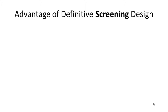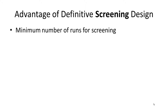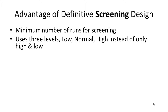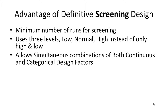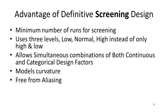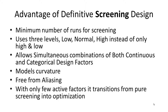Definitive Screening Designs are primarily used for screening and, as you'd want from screening, they have a minimum number of runs. But they use three levels — low, normal value, and high — instead of only high and low. That's an advantage for engineers wanting to know how to set levels. They allow simultaneous combinations of both continuous and categorical design factors, allow modeling of curvature when present, and are free from aliasing, which many screening designs suffer from. If there are only a few active factors, they can project from pure screening into a response surface model usable for optimization.